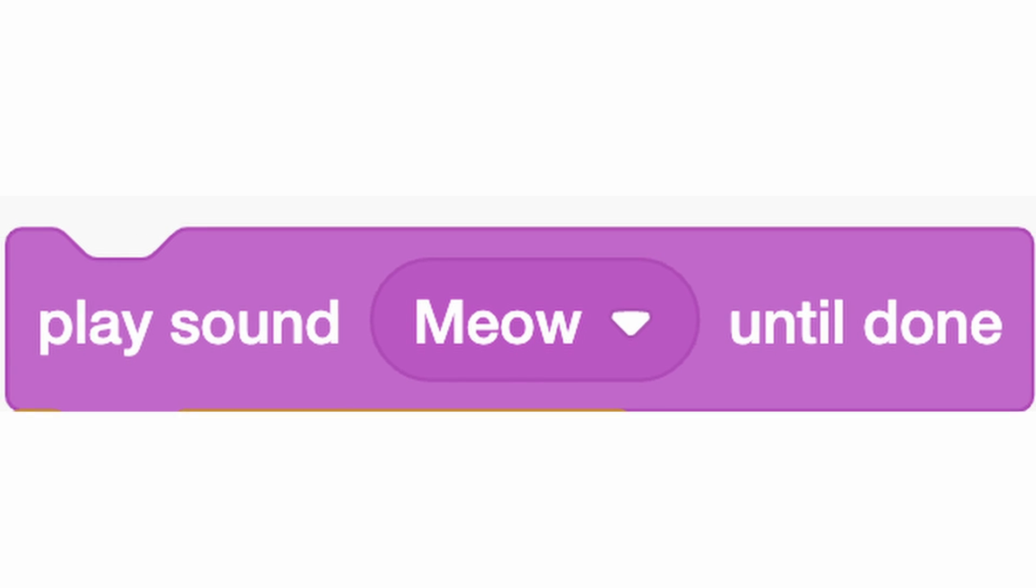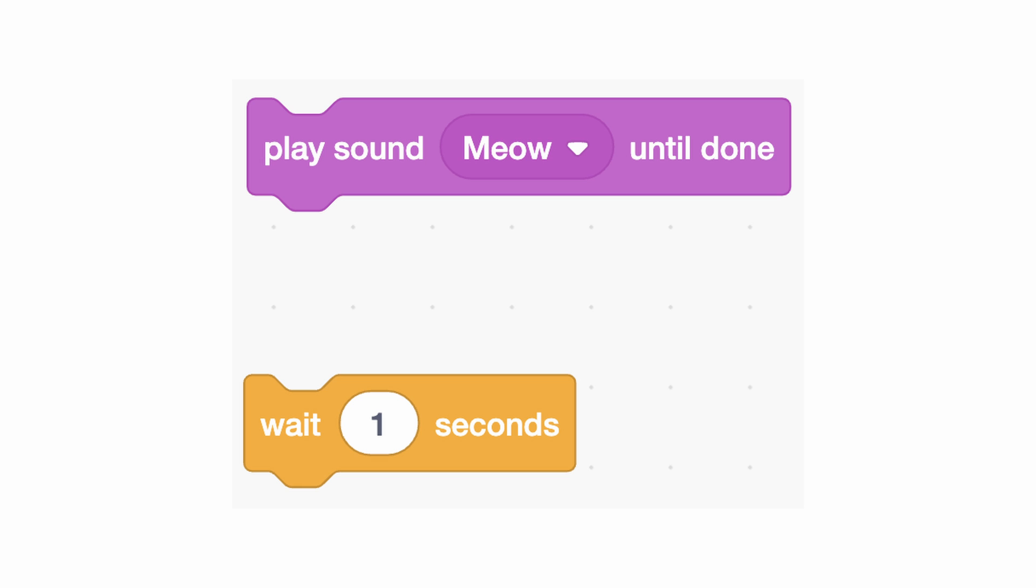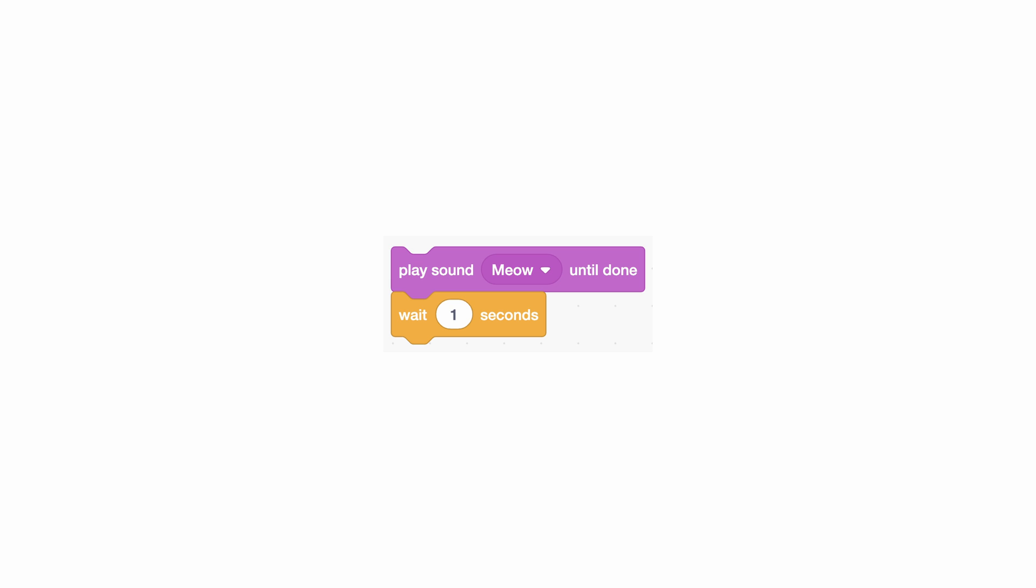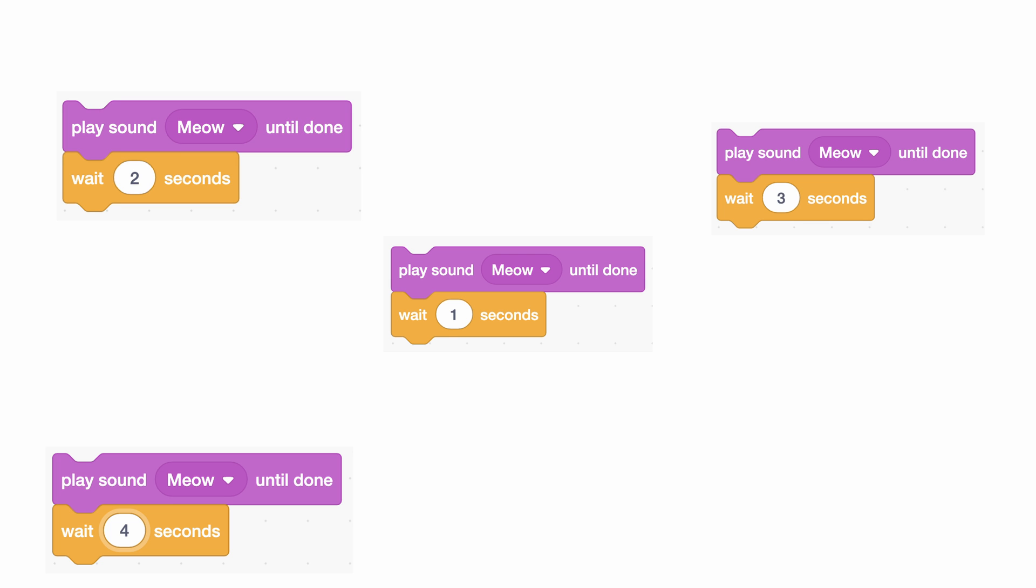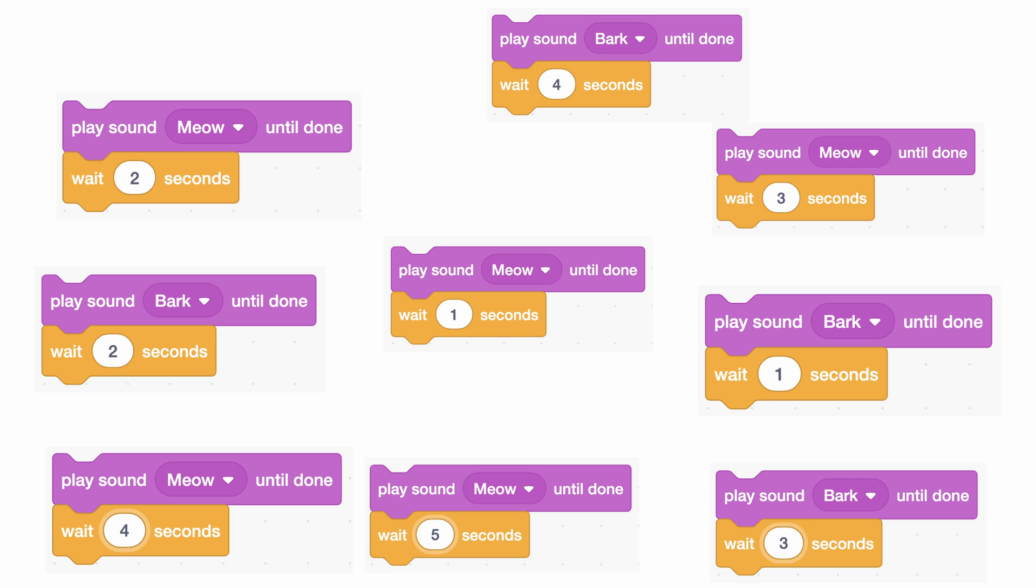However, a compelling question emerges. Why doesn't Scratch have a convenient meow then wait one second block readily available? Why did we have to put together this code ourselves? Well, if Scratch had every single combination of every different block, then the number of blocks you could choose from would be literally infinite.